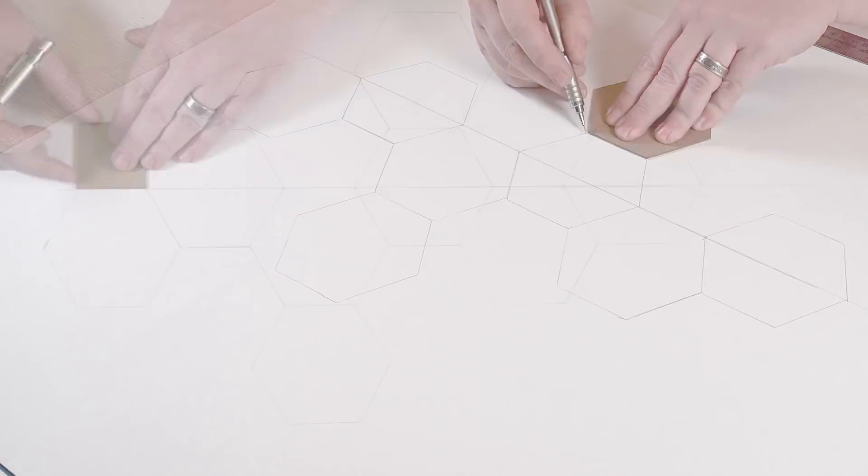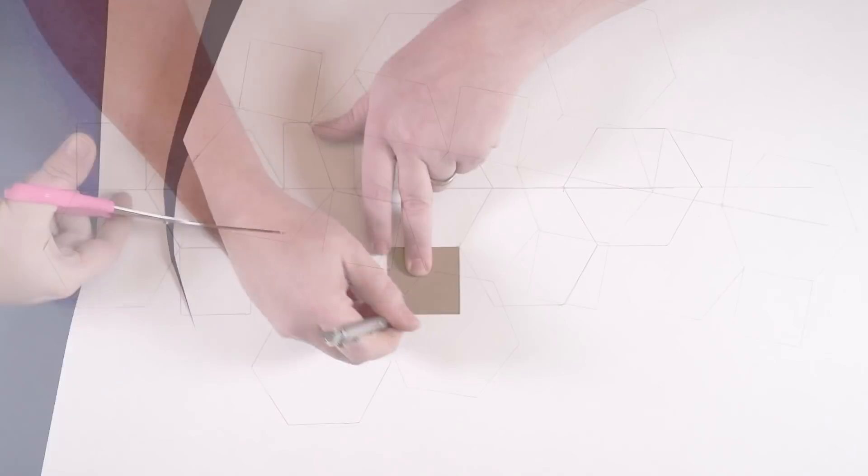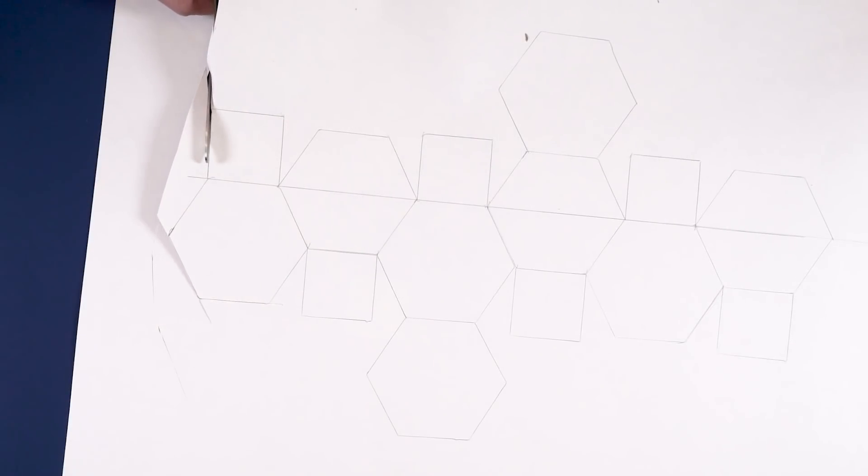Now we have our completed template for our truncated octahedron. So what we do now is begin to cut this out.